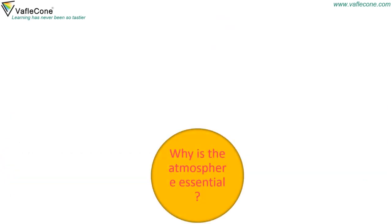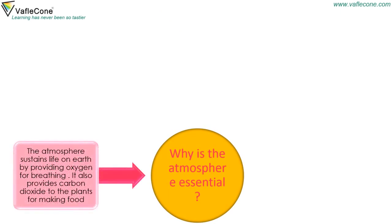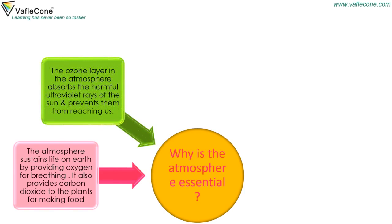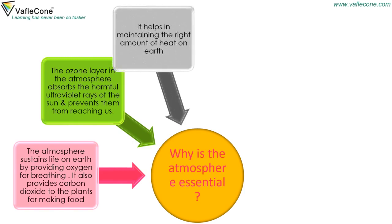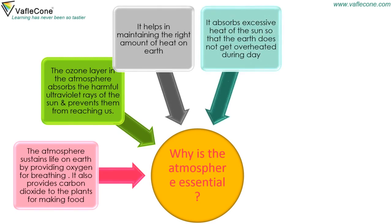The atmosphere is essential because it sustains life on earth by providing oxygen for breathing and carbon dioxide to plants for making food. The ozone layer absorbs harmful ultraviolet rays of the sun and prevents them from reaching us. It also helps in maintaining the right amount of heat on earth, absorbing excessive heat of the sun so that the earth does not get overheated during the day.